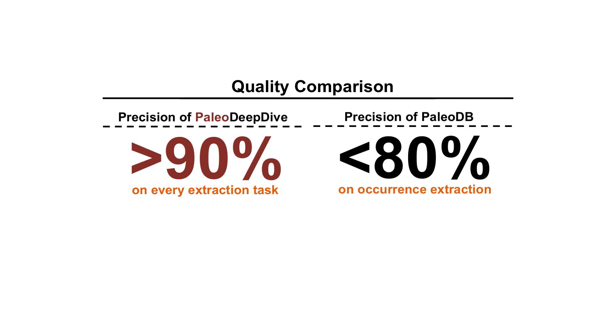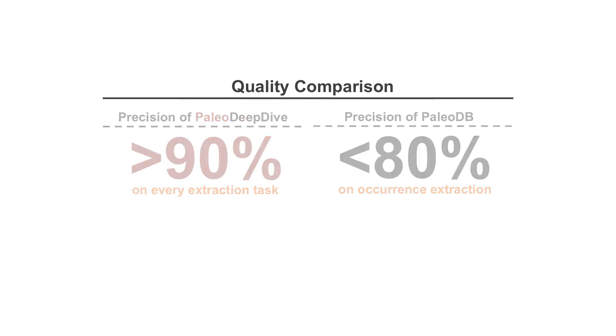For example, out of all 18,000 occurrence relations extracted by humans in PaleoDB, more than 20% were found to be incorrect by our geoscientist expert collaborators.